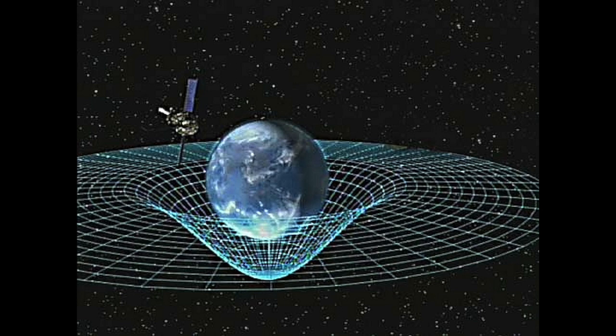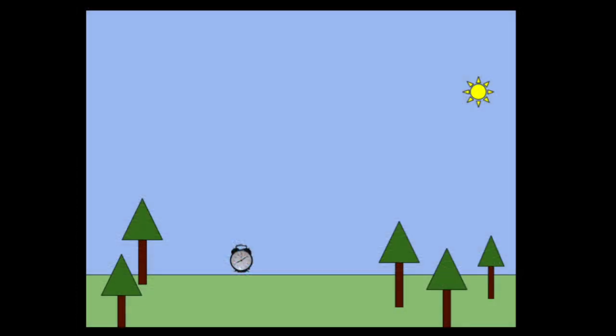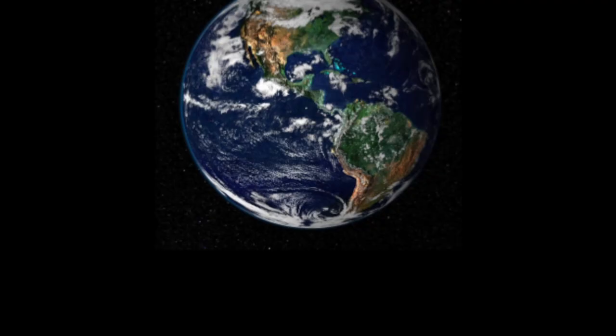This is where general relativity comes from. As we go higher above the Earth's surface, our clocks aren't going faster because we experience weaker gravity. Rather, we experience weaker gravity because time runs faster.